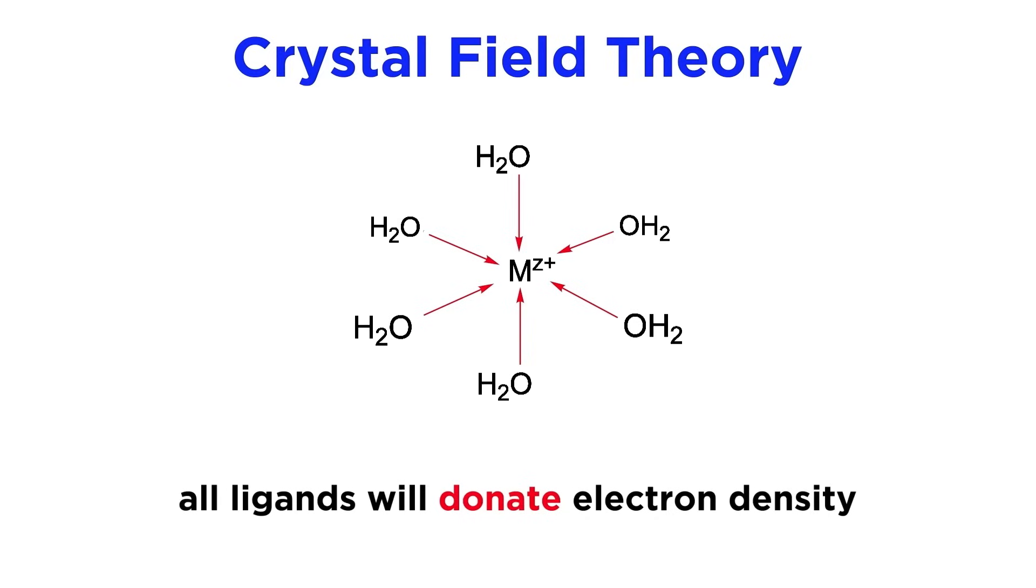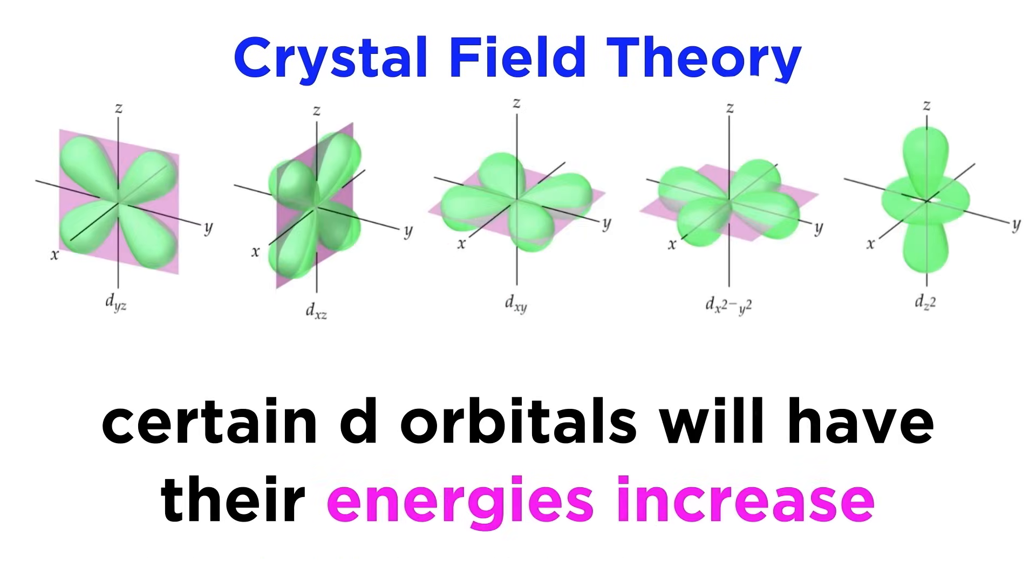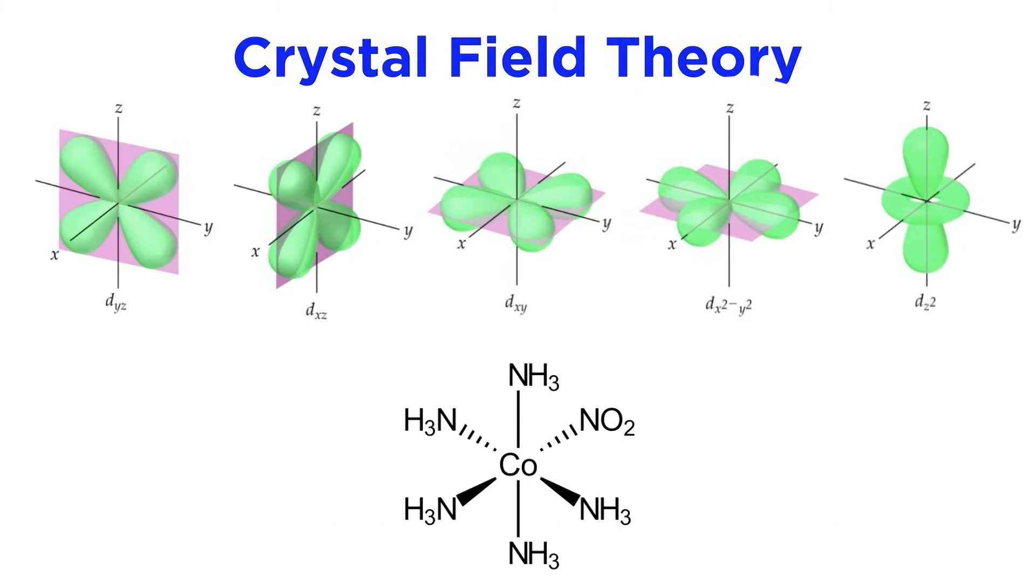The first thing we must understand is that ligands all have excess electron density that they are donating to the metal ion, and this electron density will repel existing electron density on the metal ion. Due to this repulsion, the energy of certain d orbitals will be increased, and not in an equal manner. To understand why, let's look at this octahedral complex, a very common geometry for coordination compounds. The central metal atom has valence electrons in these d orbitals, which when unhybridized look like this.